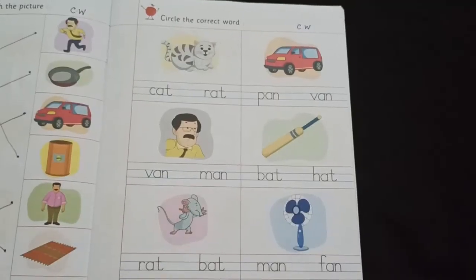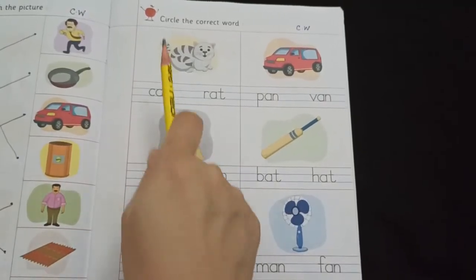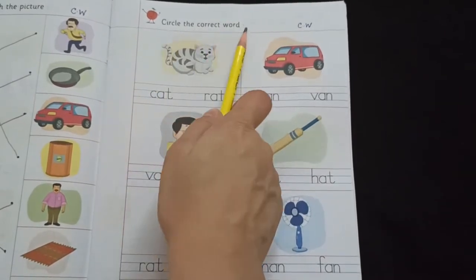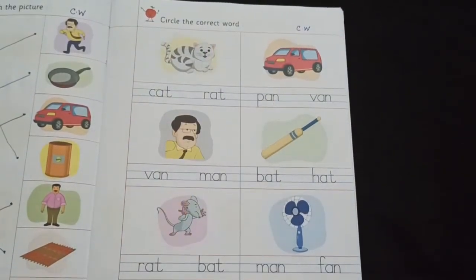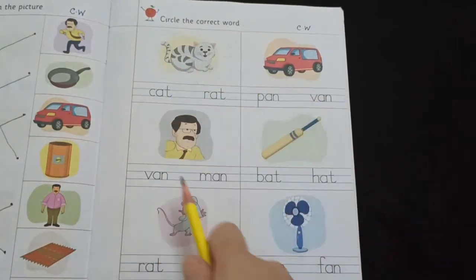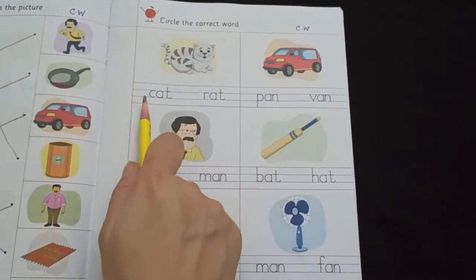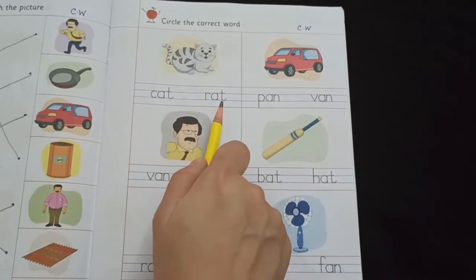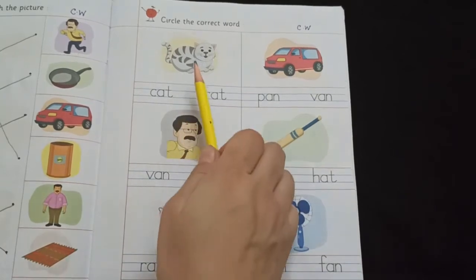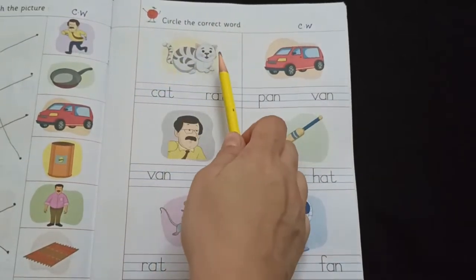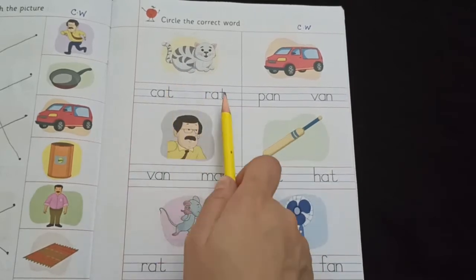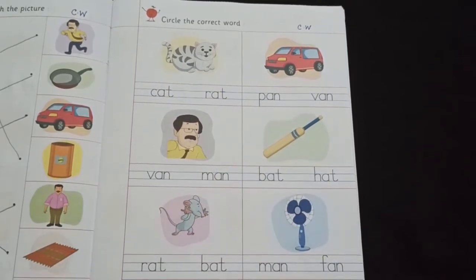Children, now we are going to do the second worksheet. Name of the worksheet is circle the correct word. You can see, there are few pictures. And below every picture, there are two words written. Two options are there. What you have to do? You have to recognize the picture and put a circle on the correct word. So, let's start.